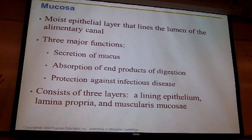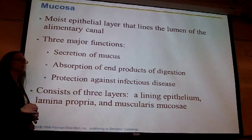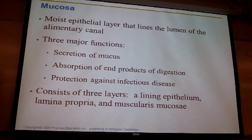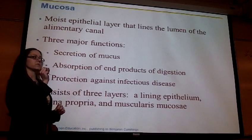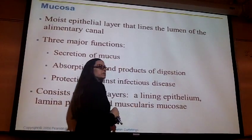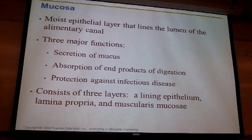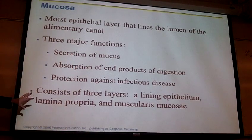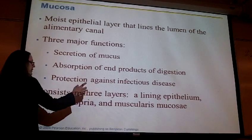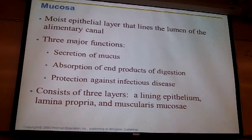The muscularis mucosa smooth muscle cells are not the ones setting up peristalsis or segmentation — that requires a lot of muscle and occurs in a different tunic. The three layers of the mucosal tunic are: epithelia, lamina propria (loose connective tissue), and a very thin layer of smooth muscle cells — the muscularis mucosa.